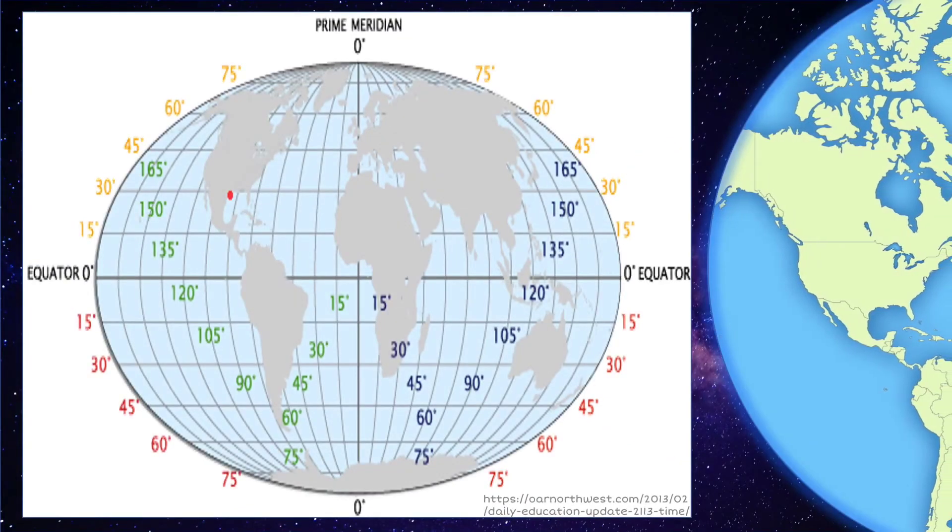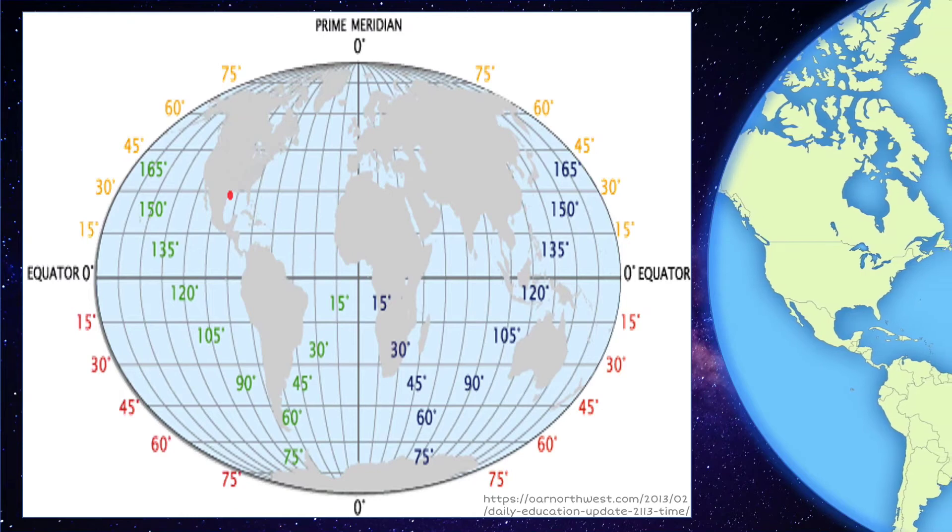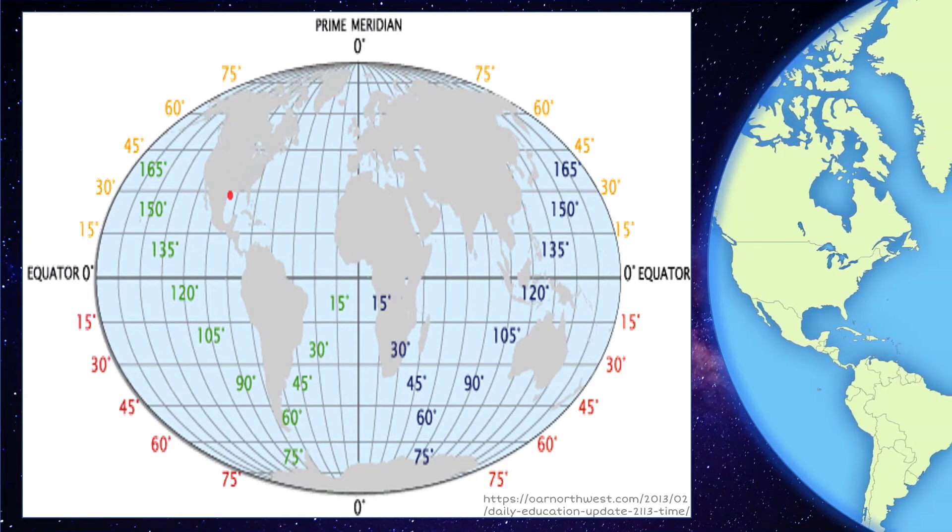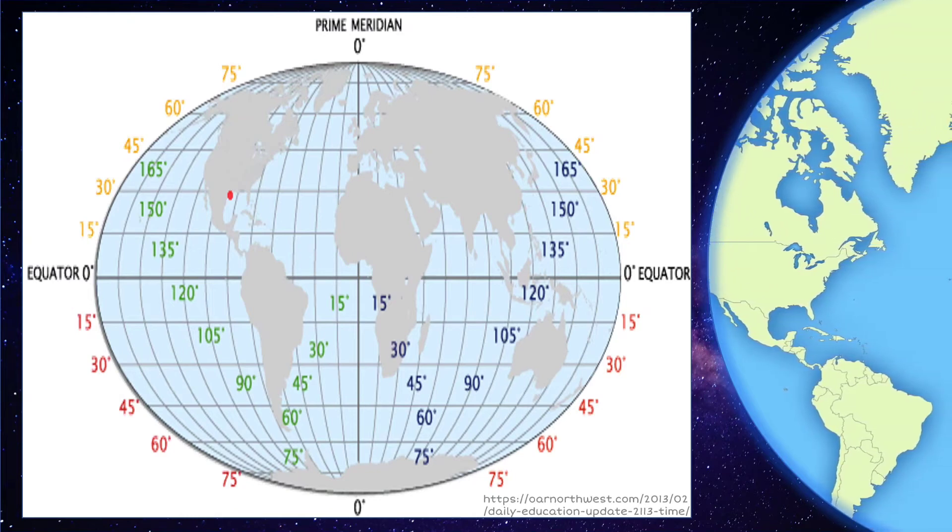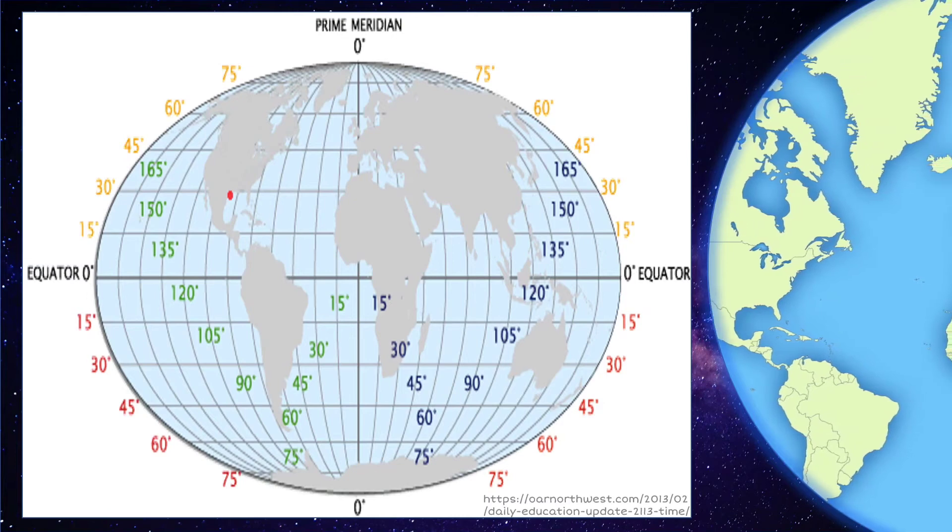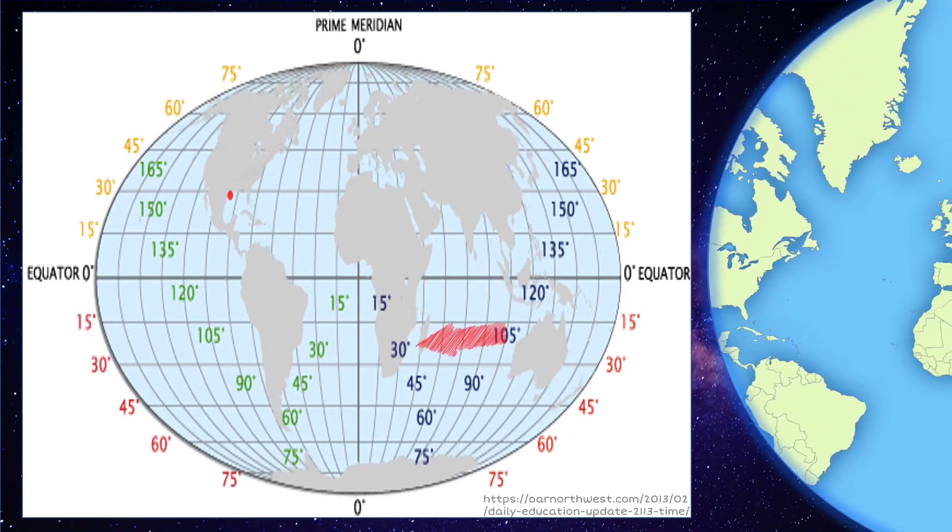For the longitude, the reference point is the prime meridian. From the prime meridian, the lines of longitude measure 15 degrees per line too.